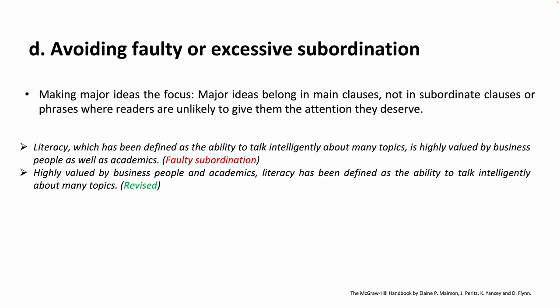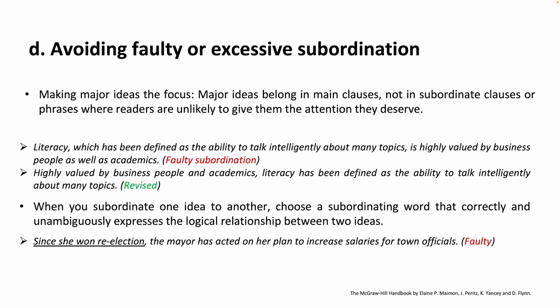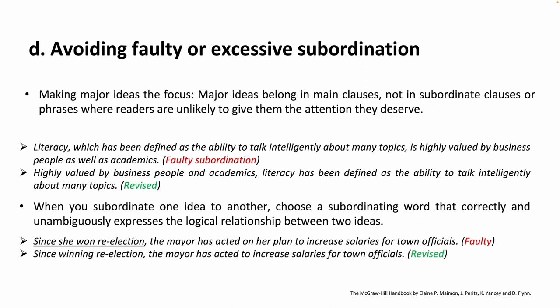When you subordinate one idea to another, choose a subordinating word that correctly and unambiguously expresses the logical relationship between the two ideas. For example, faulty: 'Since she won re-election, the mayor has acted on her plan to increase salaries for town officials.' Revised: 'Since winning re-election, the mayor has acted to increase salaries for town officials.' The main clause is 'the mayor has acted to increase salaries for town officials,' and 'since winning re-election' is the subordinate clause — note that SINCE requires the -ing form here.